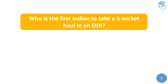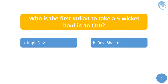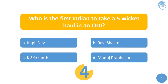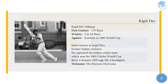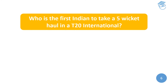The fifth question: who is the first Indian to take a five-wicket haul in an ODI? Your options are: A) Kapil Dev, B) Ravi Shastri, C) Krishnamachari Srikkanth, or D) Manoj Prabhakar. The answer is A) Kapil Dev — the Haryana Hurricane — in the 1983 World Cup, where he scored a century of 175 runs and also took the first five-wicket haul for India when he took five for 43 against the Australians in a league match.